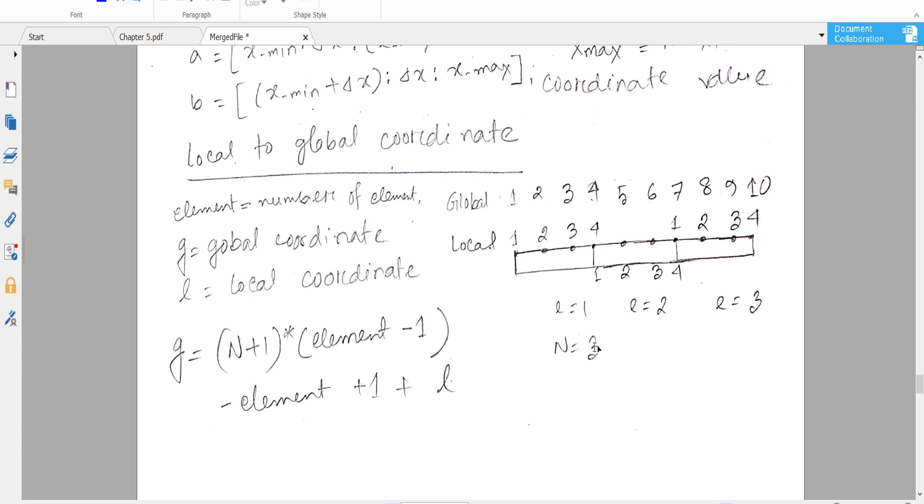And we say that element is 1, so minus 1 and 1 by 1, and then plus 1, that means 3, 4. That means it will give you the local coordinate 2.